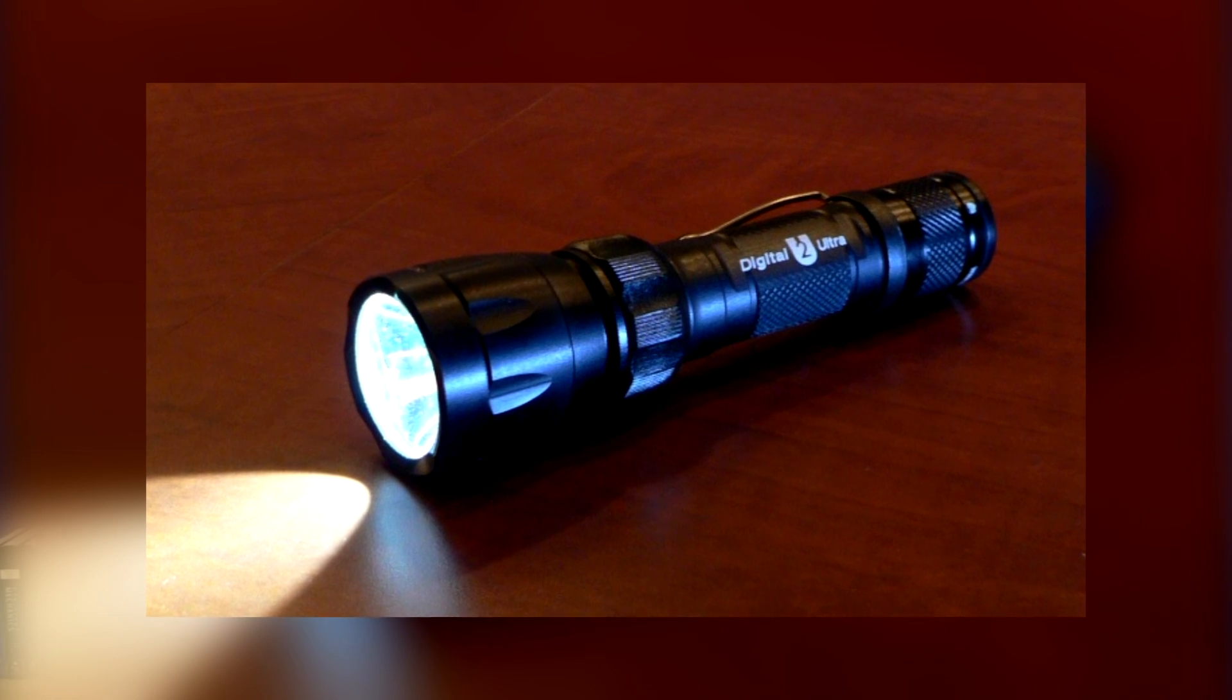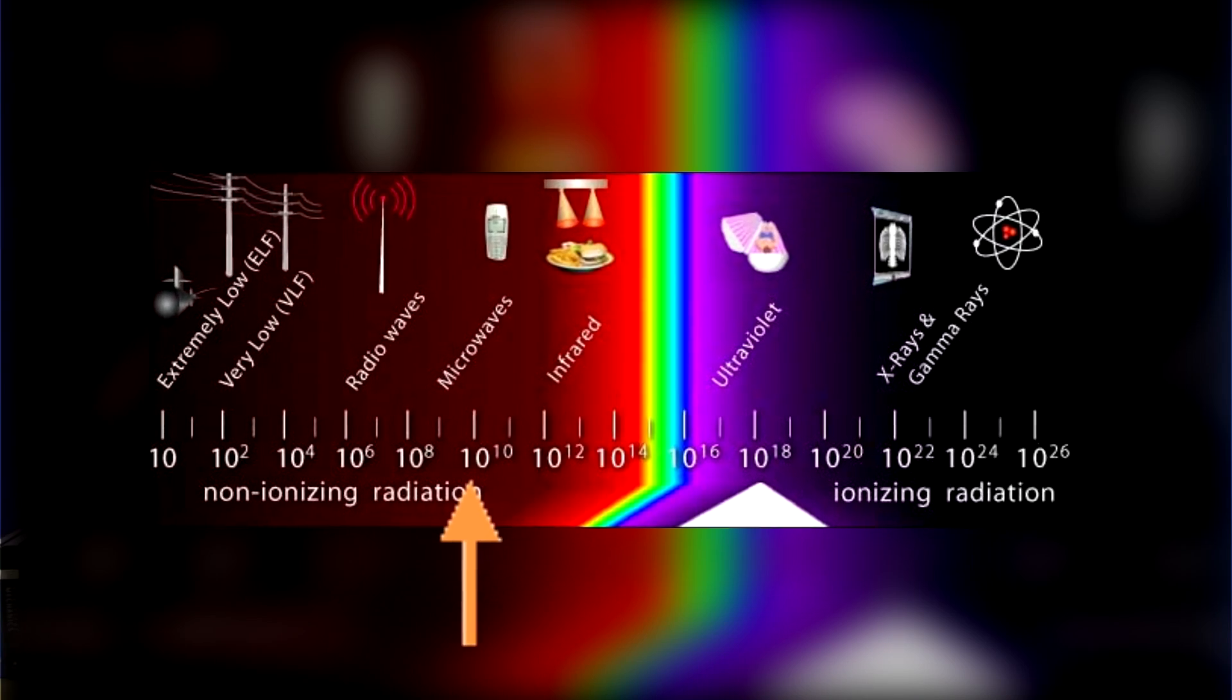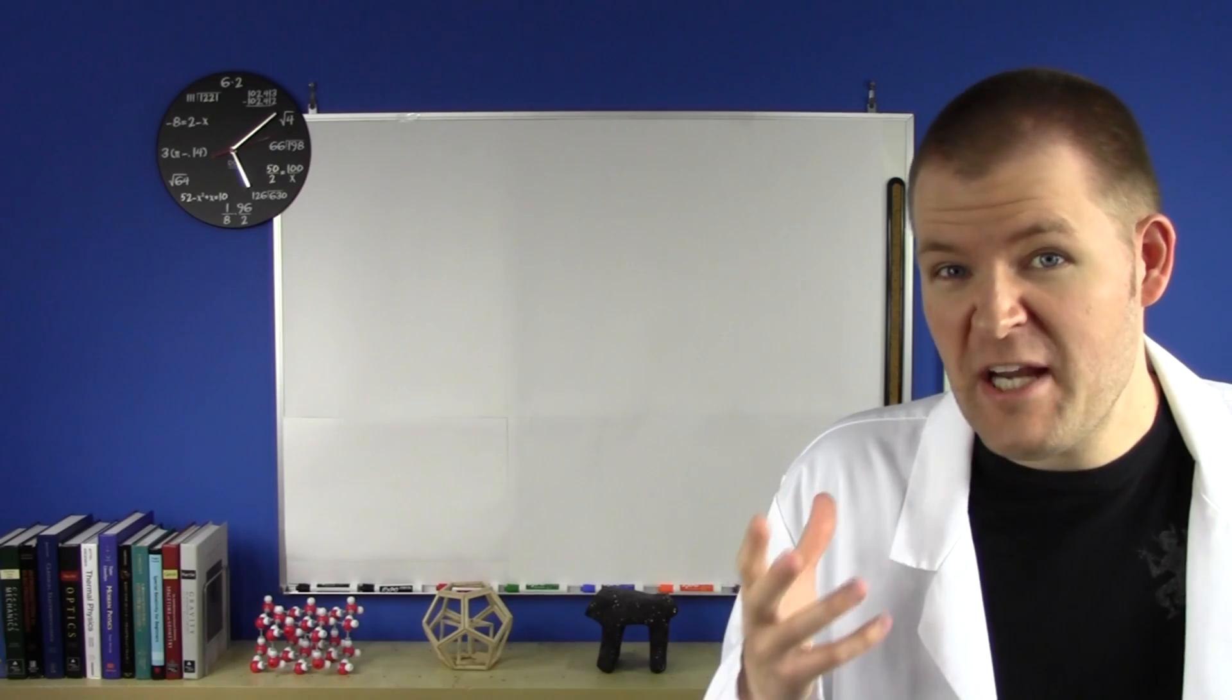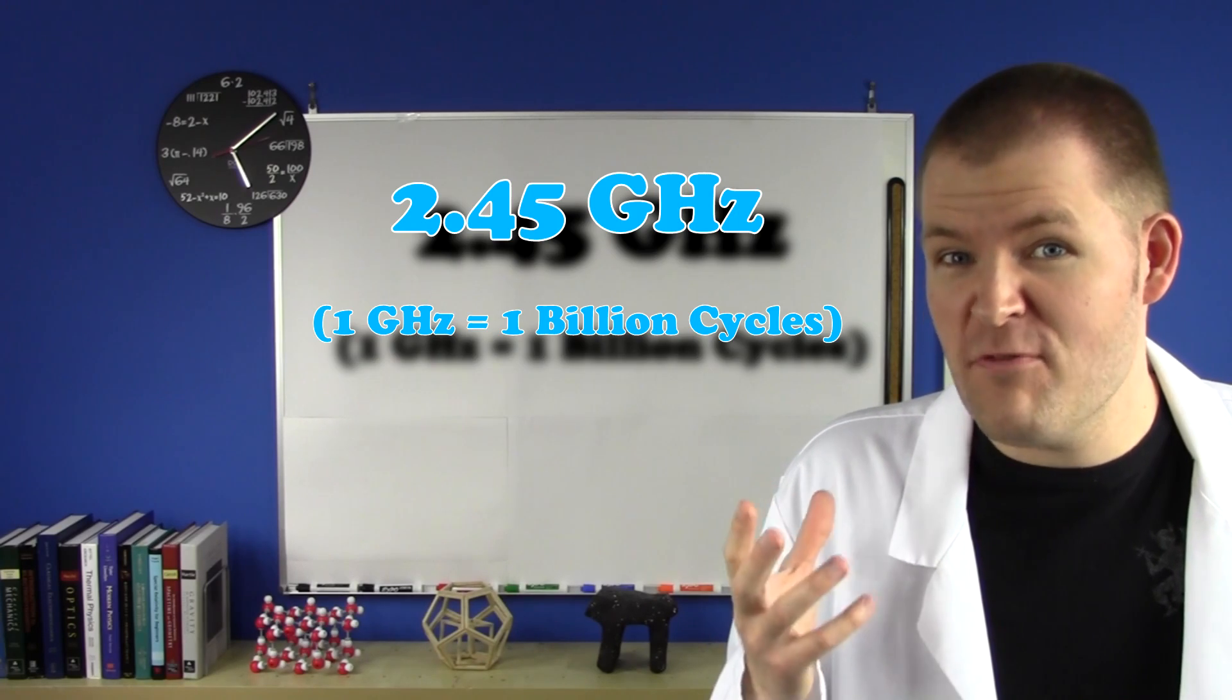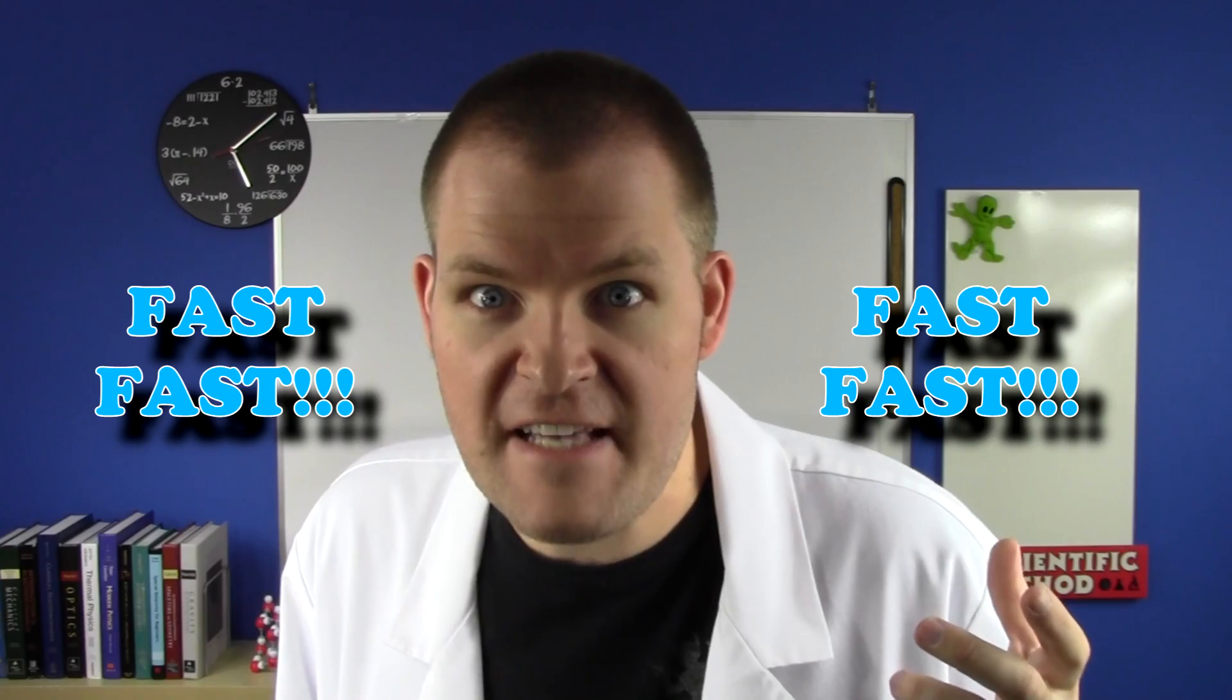No, no, not visible light. They'd have to be going a lot faster for that. These electrons make microwaves. Not the oven, the wave. That's better. The whole thing is set up so the microwaves have a frequency of 2.45 gigahertz, the frequency best absorbed by water molecules. The only way this is possible is if those electrons are going around that circle 2.5 billion times a second. I meant it when I said, FAST FAST!